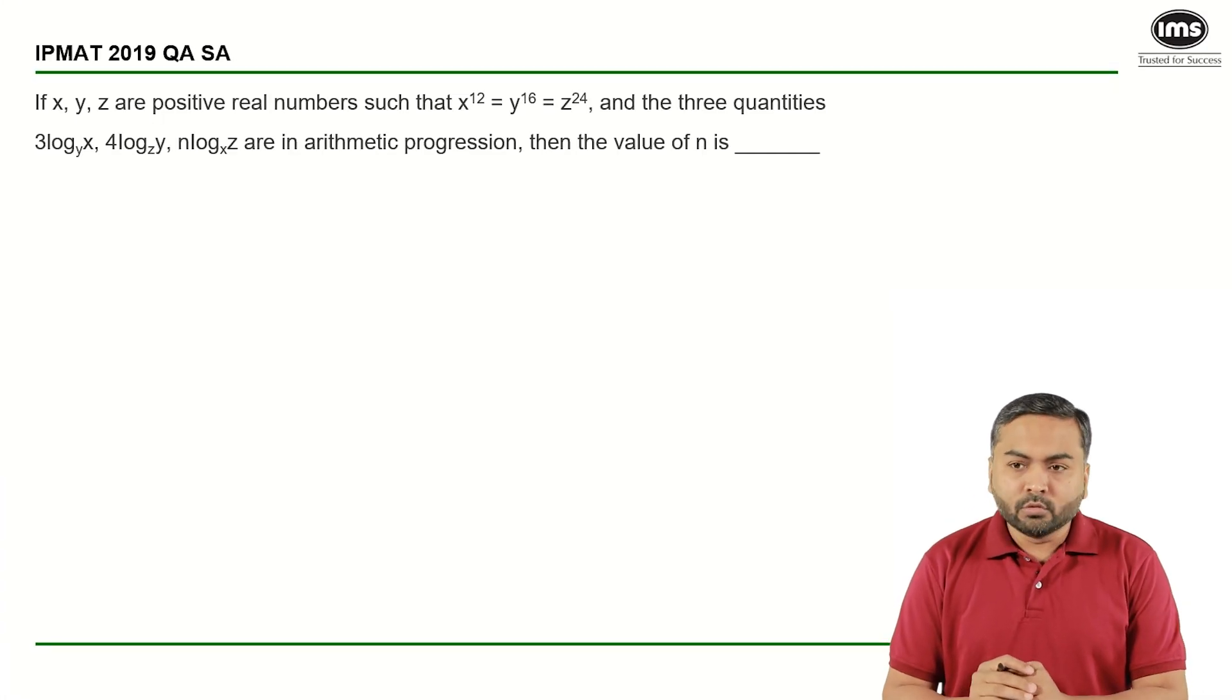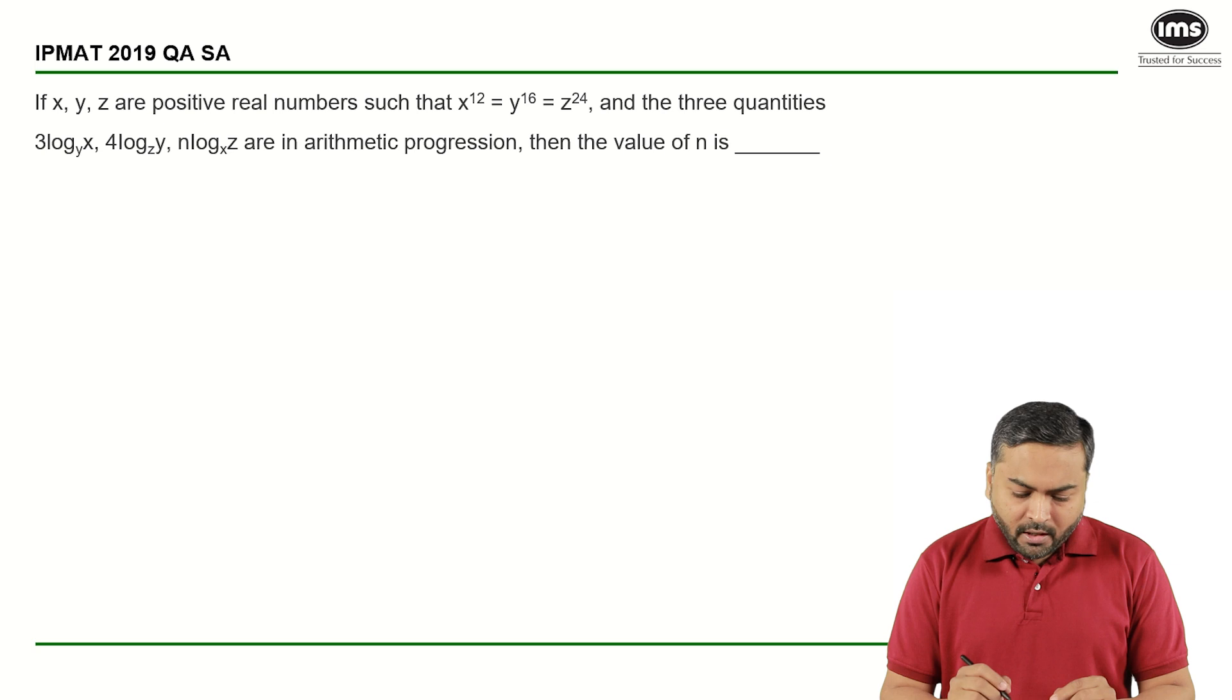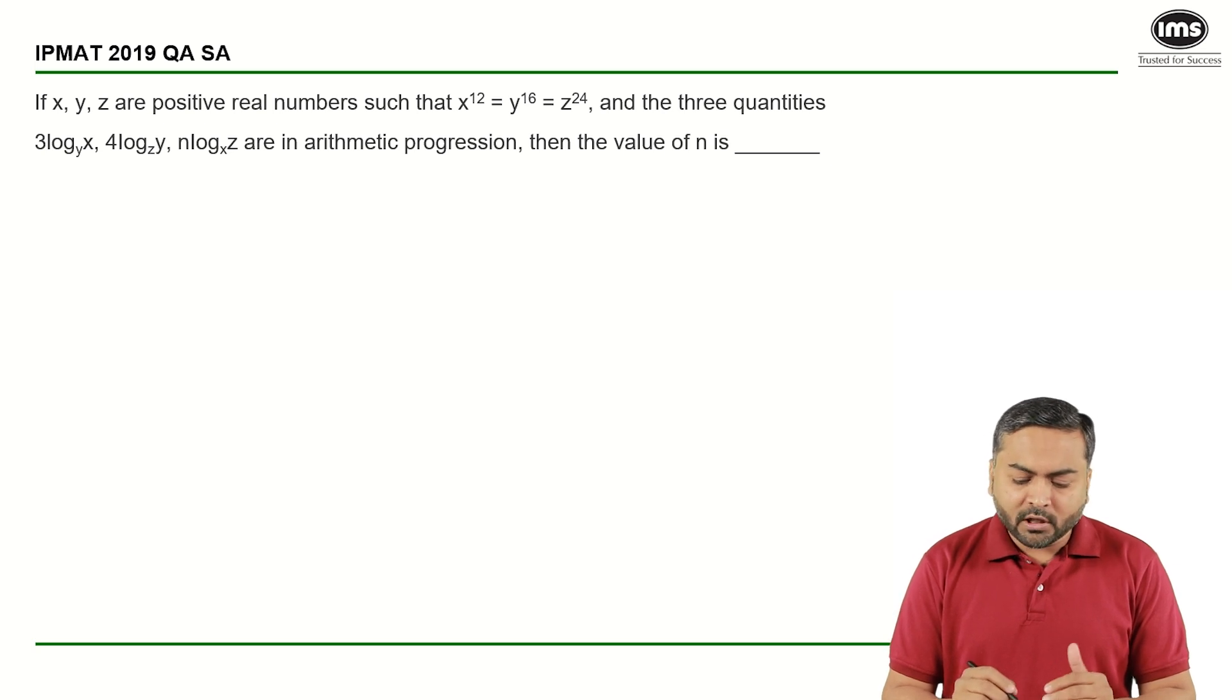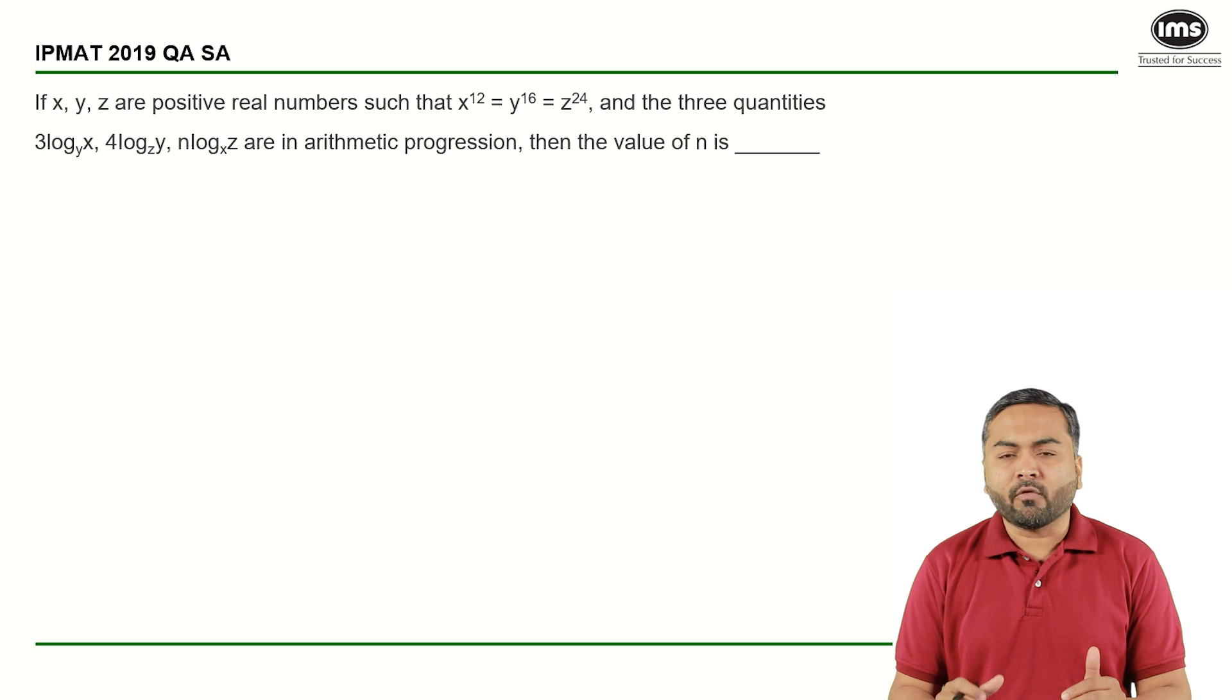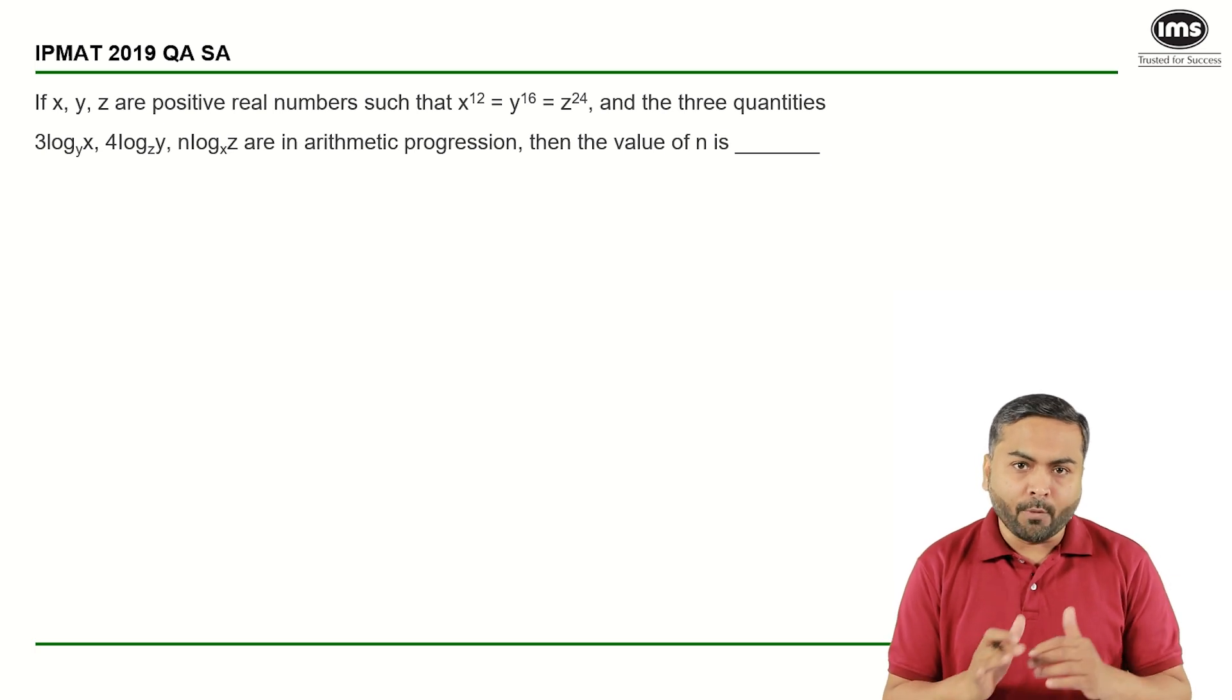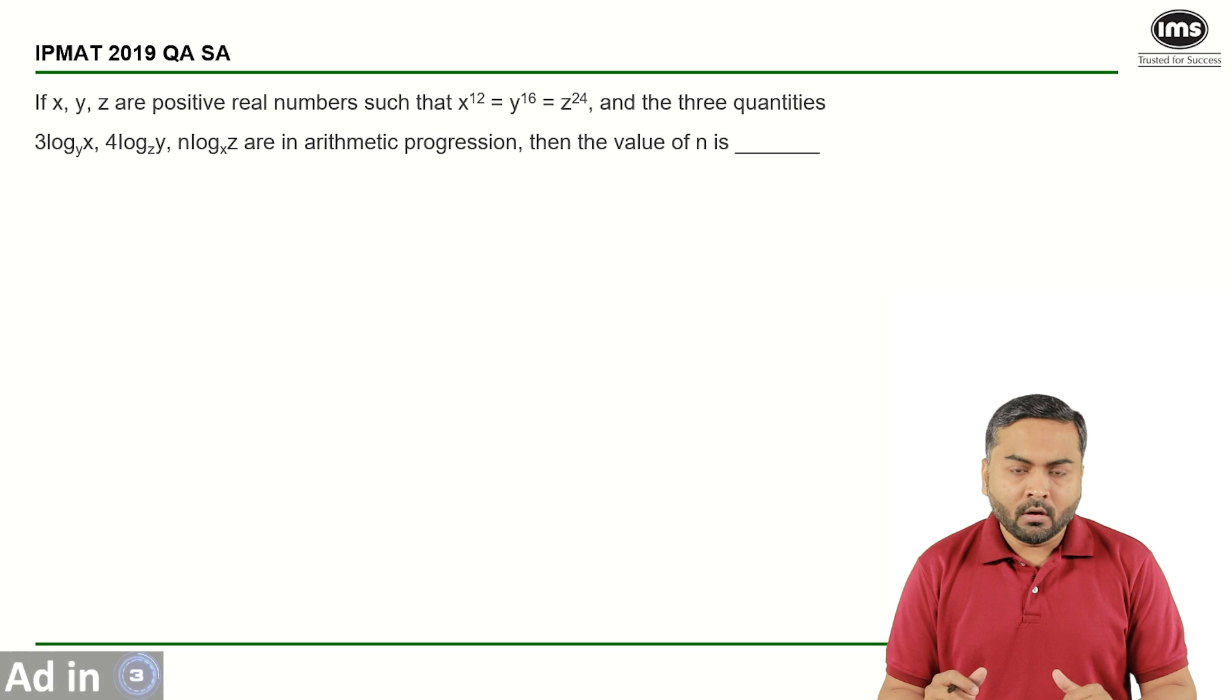Hello everyone, welcome to the series of best on IPM. This particular question is from IPMAT 2019 short answer section. If x, y, z are positive real numbers such that x raised to 12 equals y raised to 16 equals z raised to 24, and these three quantities are in arithmetic progression, then the value of n is—I would want you to pause the video, solve the question, and then come back for the explanation.